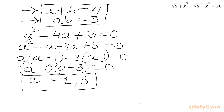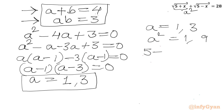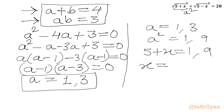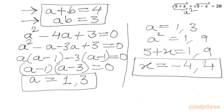Recalling that a was defined by a squared equals 5 plus x, the values a equals 1 and a equals 3 give a squared equals 1 and 9. So 5 plus x equals 1 gives x equals negative 4, and 5 plus x equals 9 gives x equals 4. We have two integer solutions: negative 4 and 4.